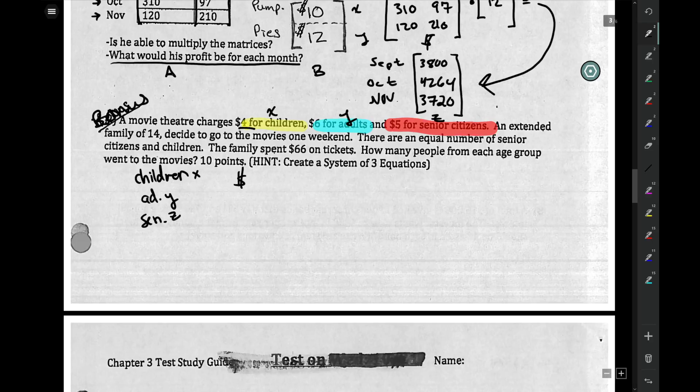One equation always has all of your money. So it's $4 per children, so 4x, $6 for adults plus 6y, and $5 for seniors plus 5z, and they spent $66. The family is 14. So many of our family are children, so many are adults, so many are seniors, and they equal 14.